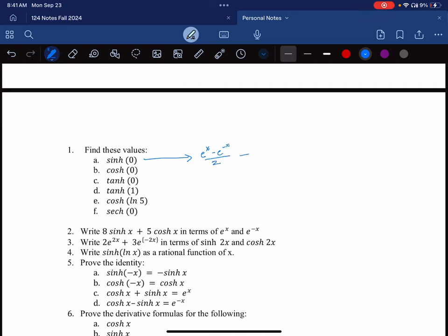And then I want to plug in zero. Why did I write minus zero? And here we have one minus one over two is equal to zero over two. That's just zero, right? So hyperbolic sine at zero is zero.